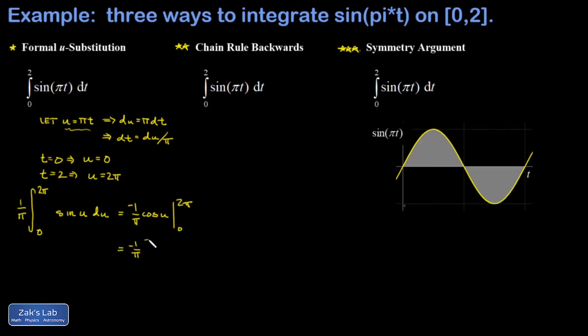I evaluate that on zero to two pi. I'm going to factor out the negative one over pi as I do this, and I get the cosine of two pi minus the cosine of zero. Then I realize the cosine of two pi is one and the cosine of zero is one, so this is one minus one, which gives me zero.